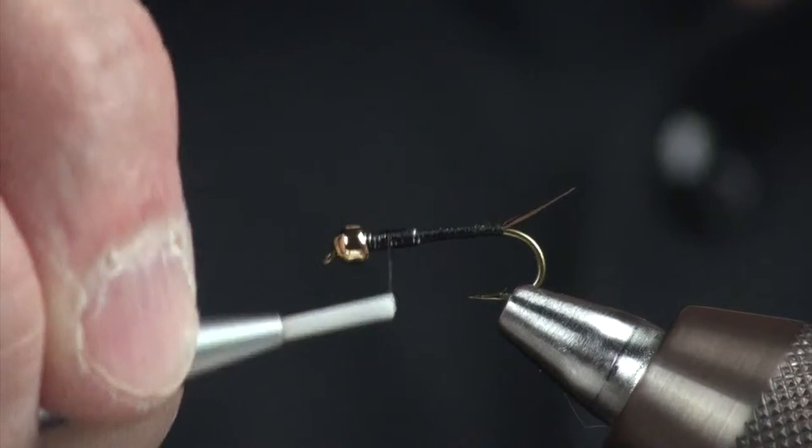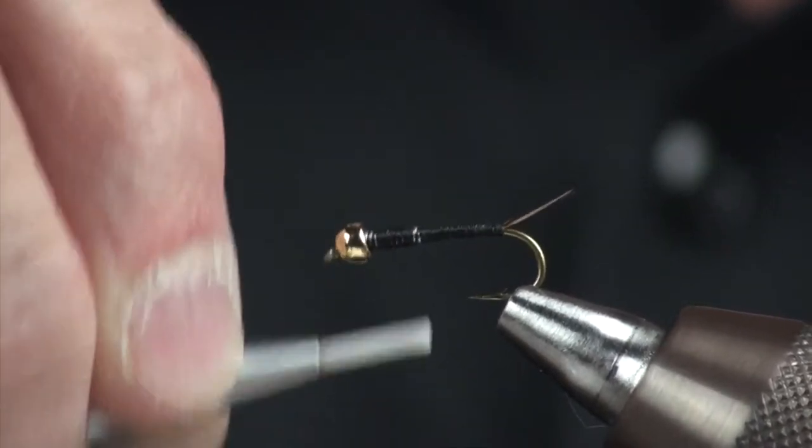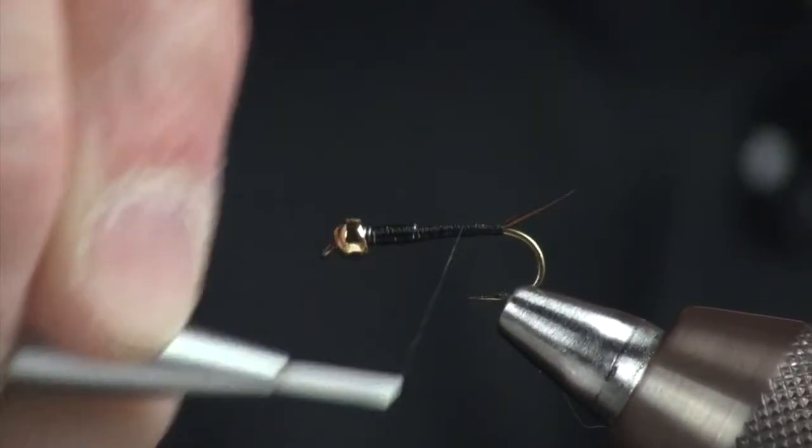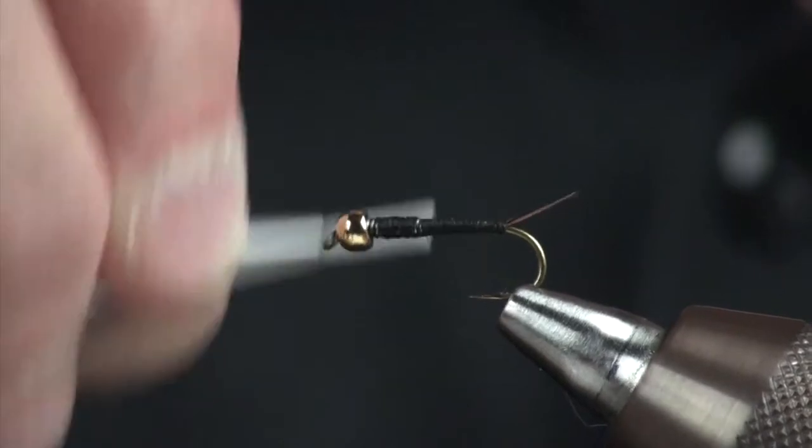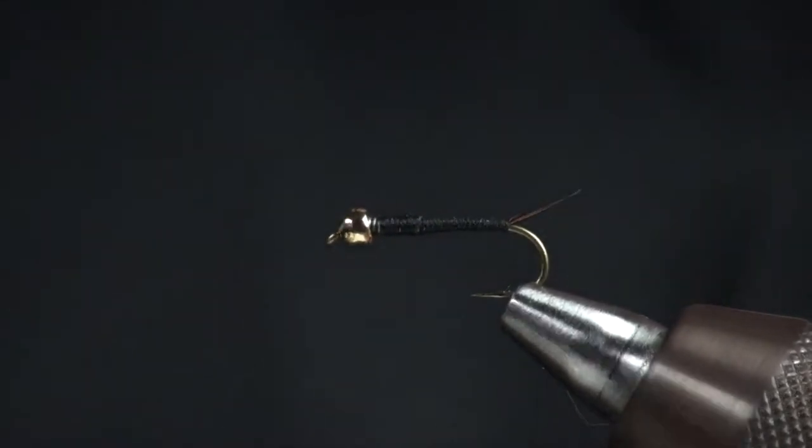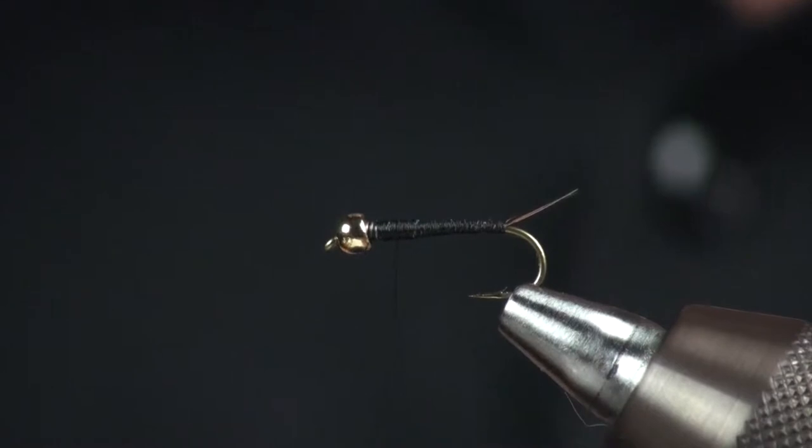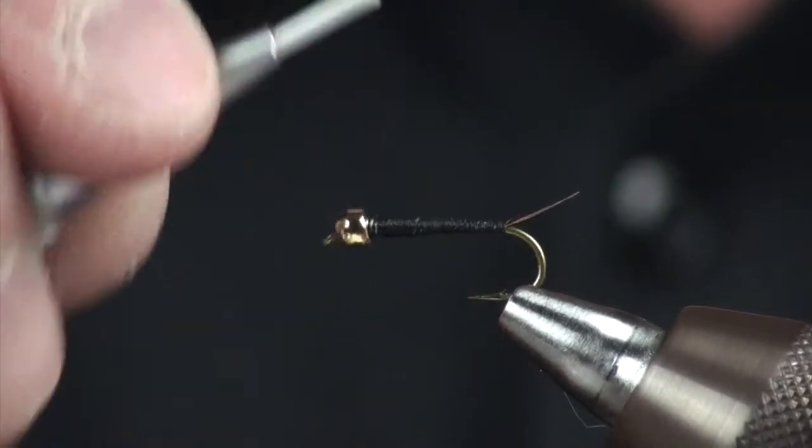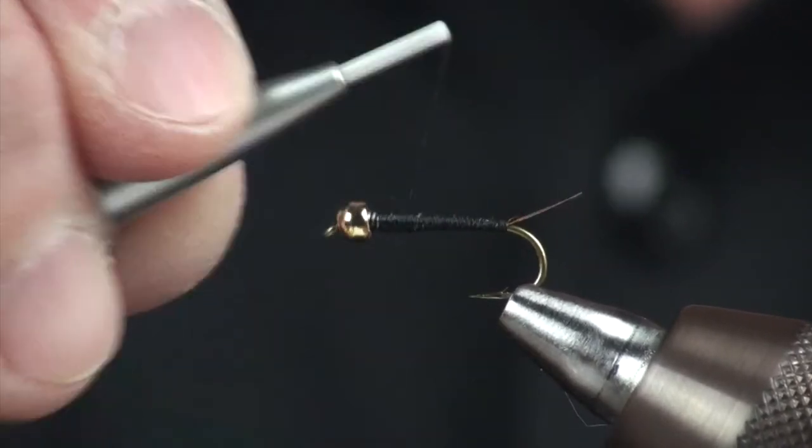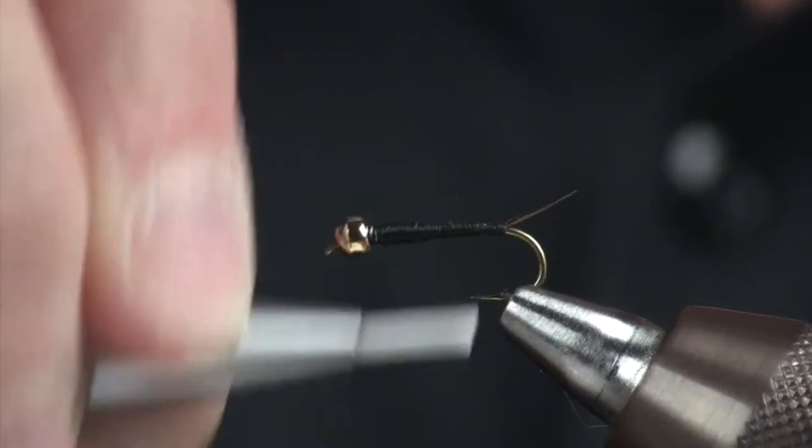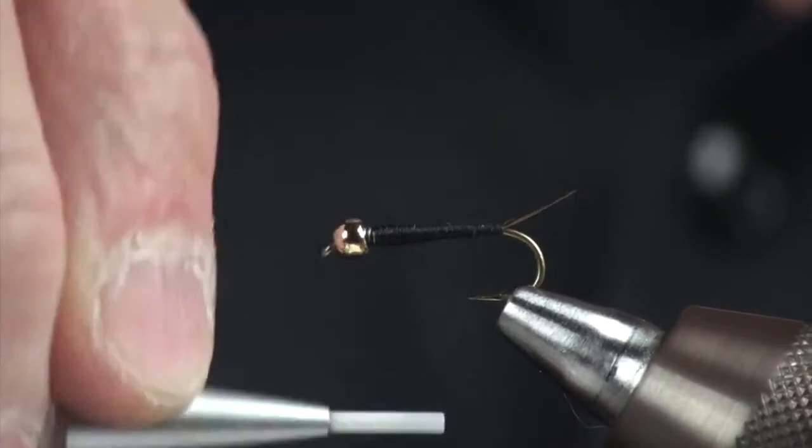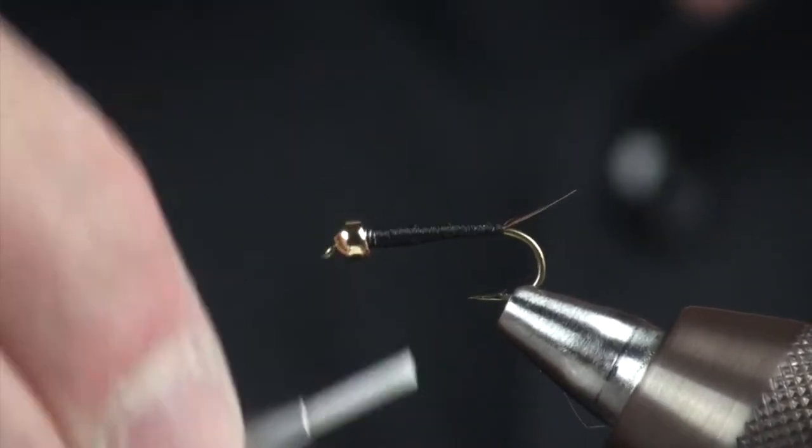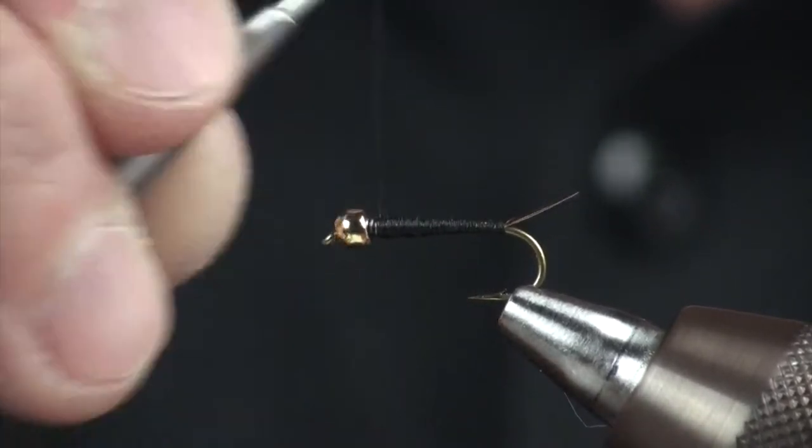Also, when you're wrapping, if you have very little thread coming off your bobbin, you have a little bit more control where you want to place this. If I was wrapping this and I had my thread way out here and I'm making these huge, big revolutions, it takes a lot of time. I'm not very precise on my wraps. And things can get out of hand pretty quickly. Also, if you're tying copper johns, this would be the right technique to do that as well.